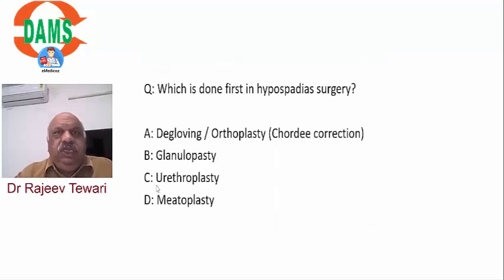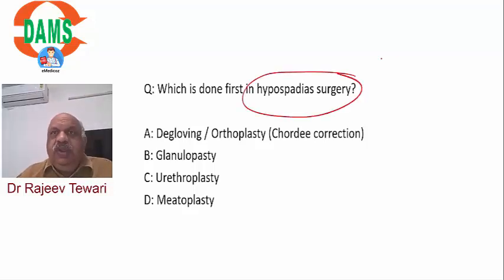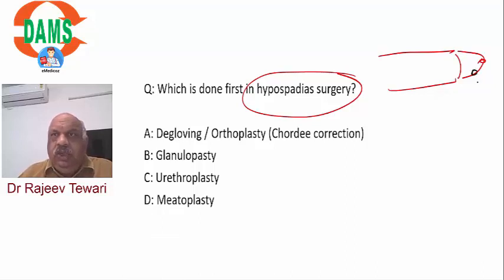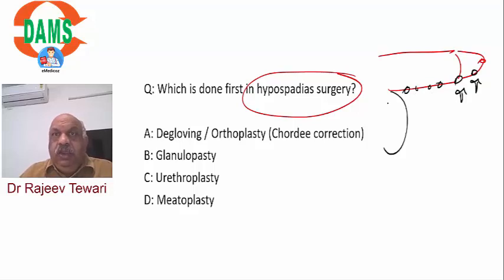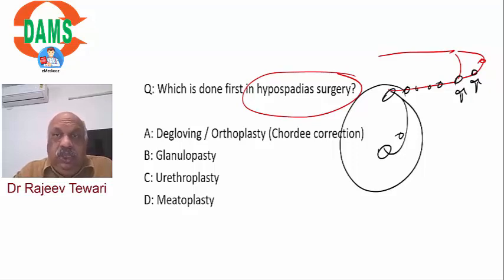Hypospadias: the meatus is not at the tip but on the ventral aspect. Types: glandular, coronal (both distal, 80%), penile (distal, mid, proximal), penoscrotal, scrotal, perineal. Very proximal hypospadias may appear like labia majora and bifid scrotum, resembling female genitalia - chromosomal karyotyping may be needed. Most consistent finding in hypospadias is hooded prepuce, where the prepuce only covers the dorsal aspect. This is a very important MCQ. Hypospadias is the most common penile congenital anomaly: 1 in 300.